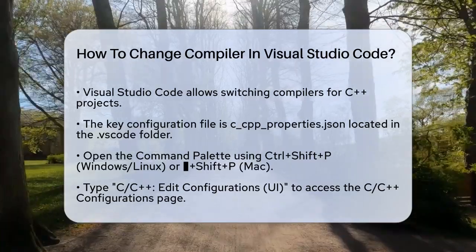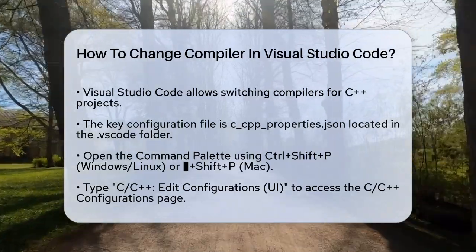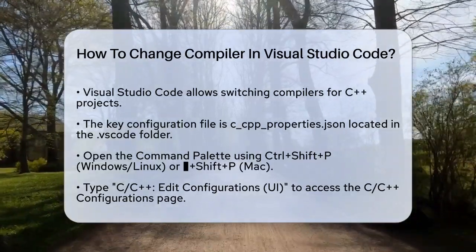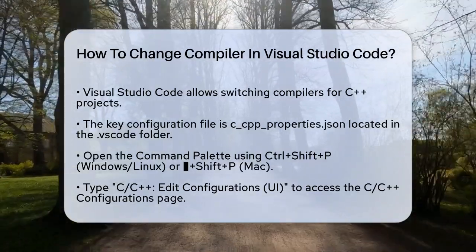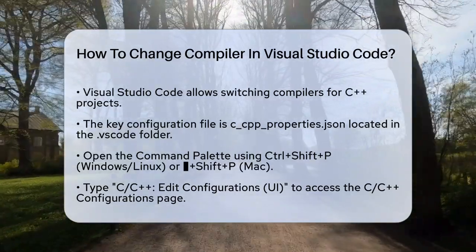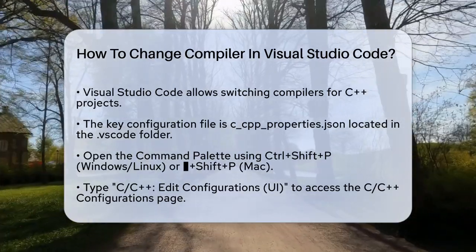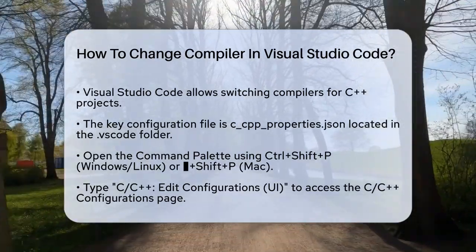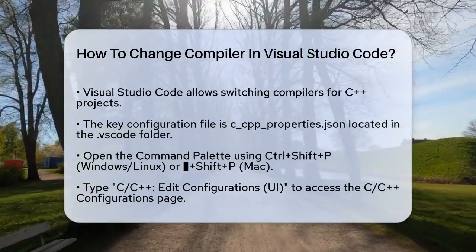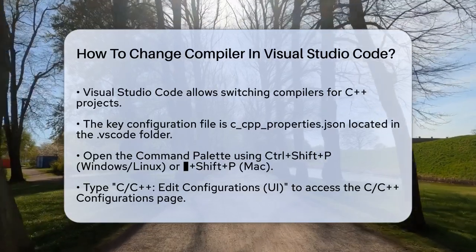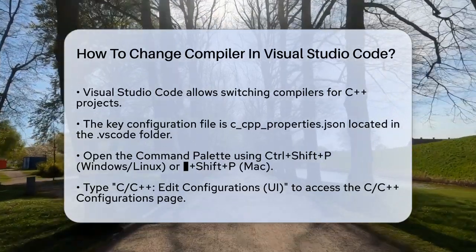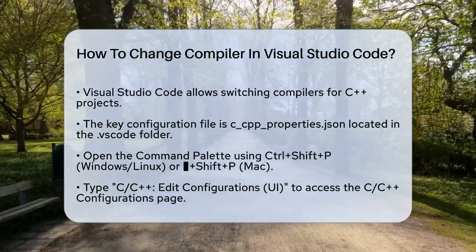First, you need to understand that Visual Studio Code uses configuration files to manage your project settings. The key file here is c_cpp_properties.json, which you can find in the VS Code folder of your project.